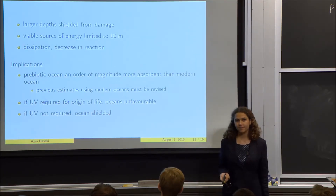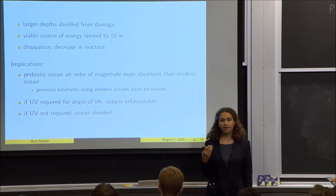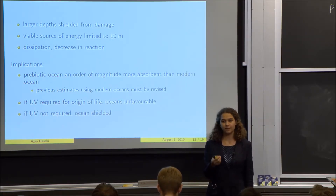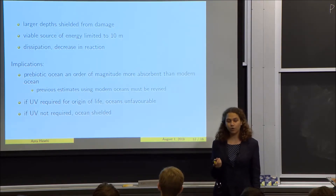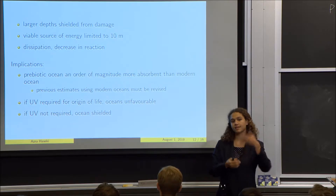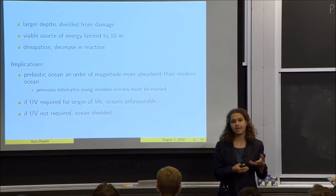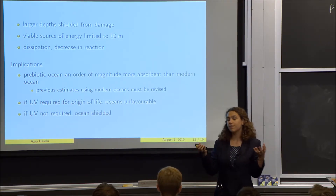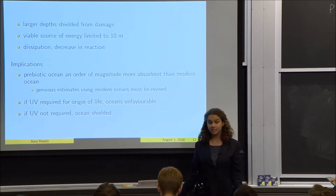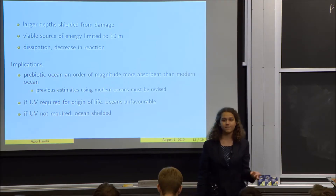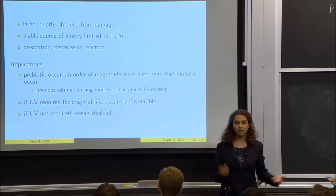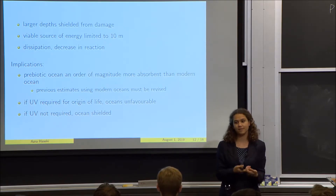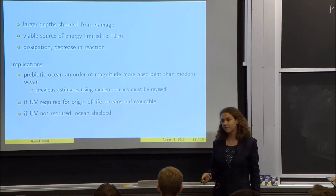What does this mean? If your pathway for the evolution of life requires UV light, then the ocean would not be a good place for this to happen, because all relevant reactions would be confined to the first 10 meters. Any molecules forming there would then dissipate through thousands of meters of ocean, resulting in very low concentrations and therefore a very low likelihood of engaging in pathways leading to life.